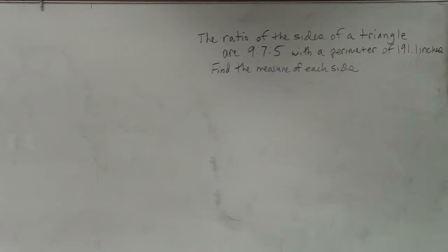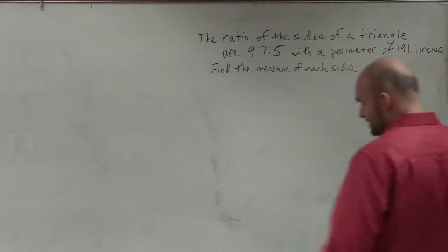So on this example, what this problem reads is: the ratio of sides of a triangle are 9, 7, 5, with a perimeter of 191 inches. Find the measure of each side.